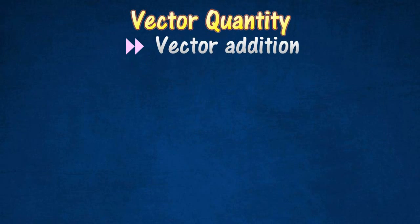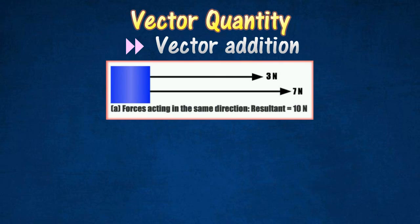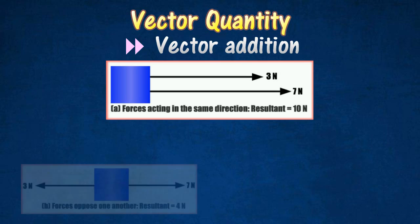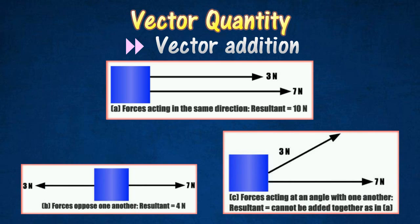When several vectors act together from a point, their combined effect is called their resultant. For example, two forces of 3N and 7N can act together towards the same direction, oppose one another, or act at a certain angle with one another.